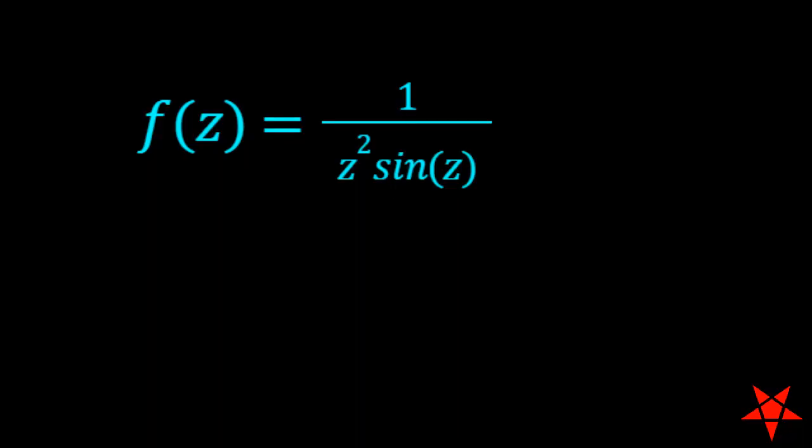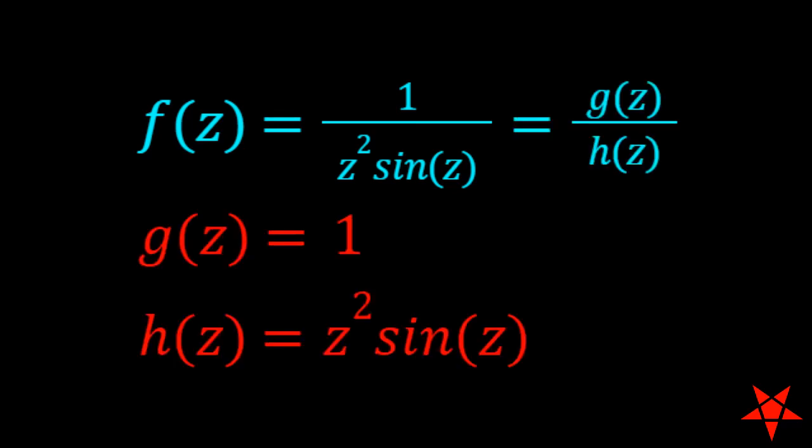Let's explore our options by separating the function that we'll call f of z into g of z equals 1 in the numerator and h of z equals z squared sine z in the denominator.